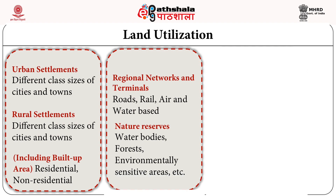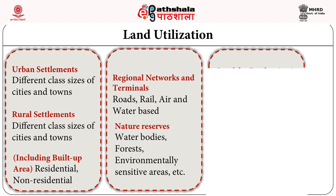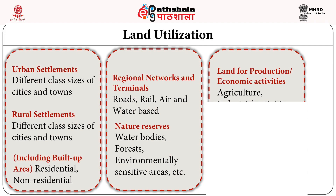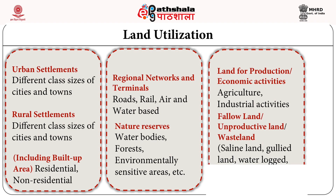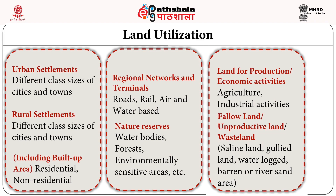There are also natural resource areas — water bodies, forests, and environmentally sensitive areas. Then there is land for production and economic activities such as farmlands and crop production areas, industrial areas and industrial estates, fallow lands including unproductive wasteland (saline, gullied, waterlogged, barren areas), and culturable fallow land which can be taken up for production.